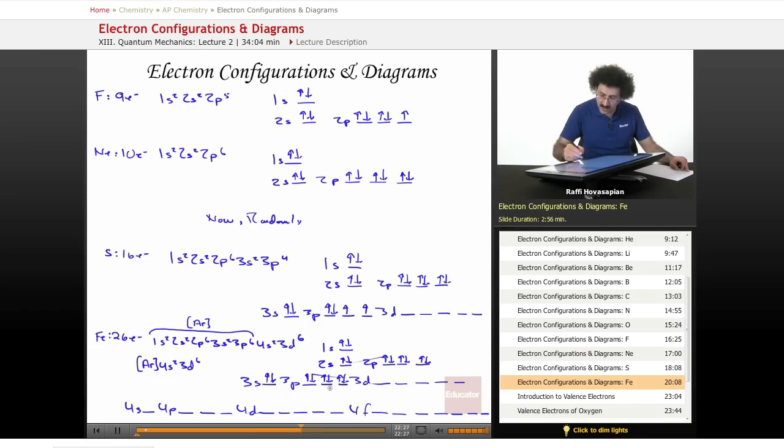Now notice from 3s2, 3p6, the order of filling is now 4s2. So I'm going to come here to 4s2. I'm going to fill that up. And then I'm going to go to 3d6. I'm going to go 1, 2, 3, 4, 5, 6.